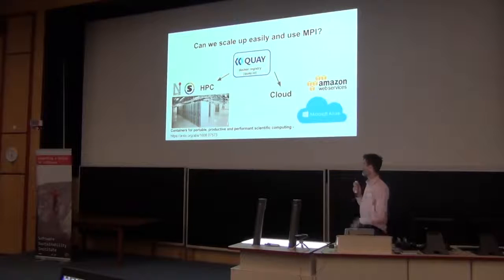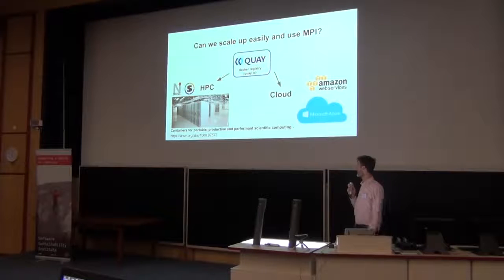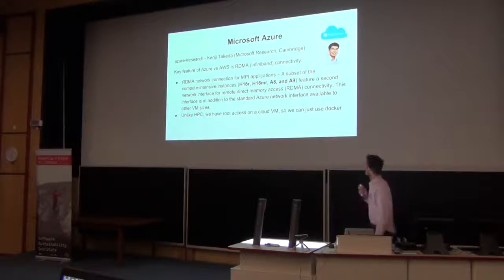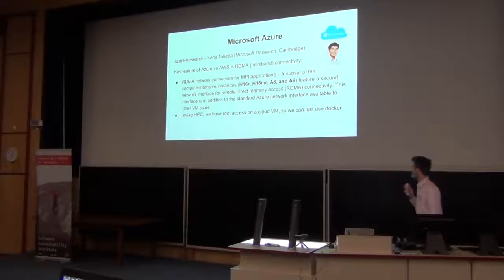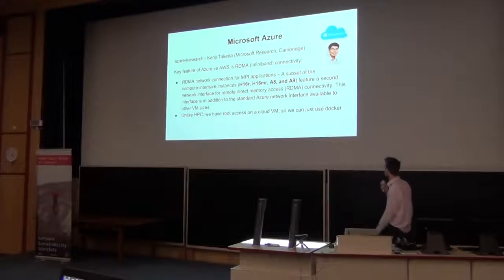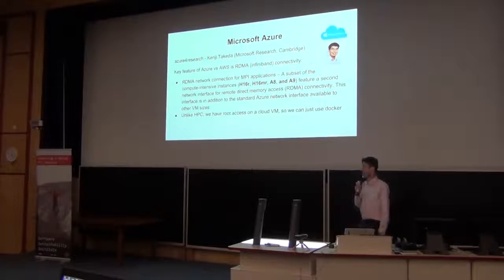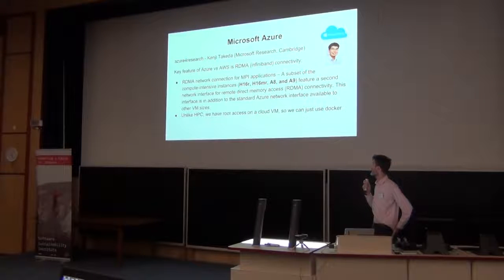The other thing was: maybe we don't have access to HPC. HPC is not necessarily easy to get onto, and maybe you want to try running on a cloud with MPI. Also in Cambridge, we've got the Microsoft Research Center, and there's the Microsoft Cloud, which is called Azure.